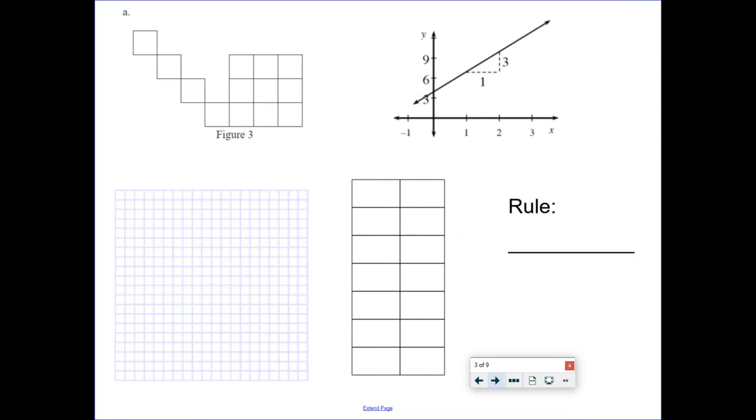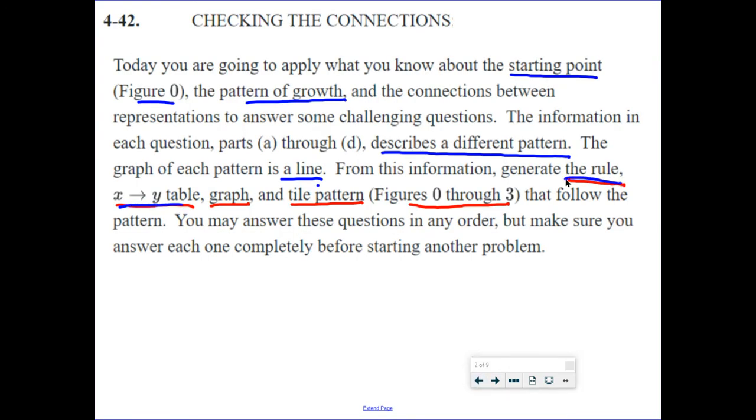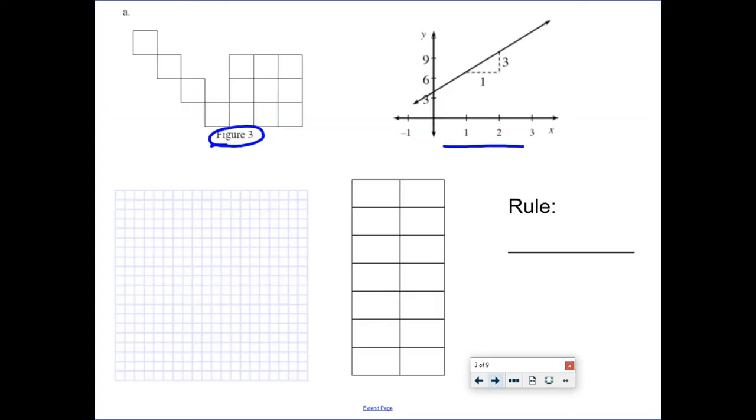This is problem 442A, and all we're doing today is A. Now, 442A gives us two things. We know figure number three looks like that, and we've got a graph. So, what do I still need to do? If I need a rule, XY table, graph, and tile pattern figures 0 through 3, I need to do several things here. First of all, I'm going to come up with a rule. I need a table, and I need figures 0, 1, and 2 to match up with all that information there. We have all the information we need here.